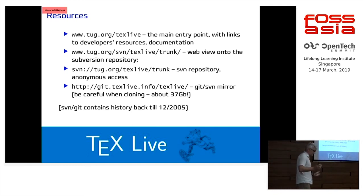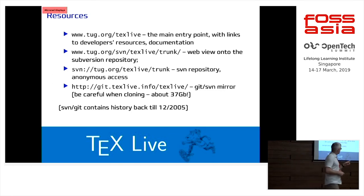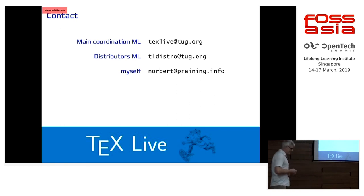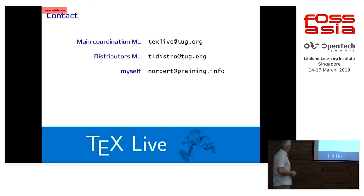Some resources: the main page is tug.org/texlive — there you get all the information and downloading. There is a web view on our Subversion repository, with anonymous access for download. I also carry a Git-Subversion mirror, but if you clone it be careful — it's close to 40 gigabytes and the history goes back to 2005. If you want to contact us, texlive@tug.org is the main mailing list — everyone can write there. We have a mailing list dedicated to distributors, a security mailing list for security reports, and you can also contact me directly.